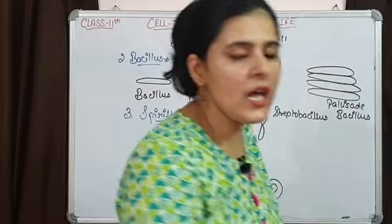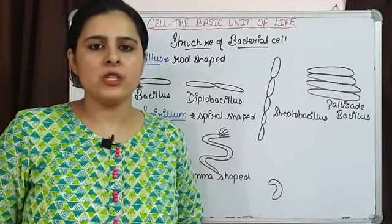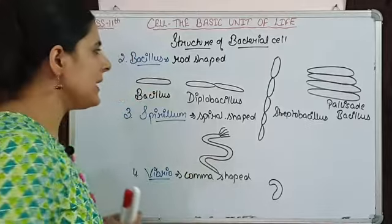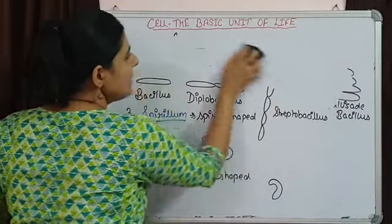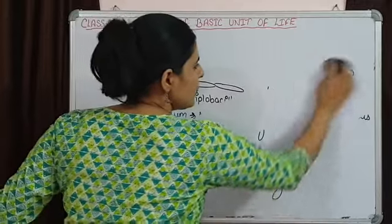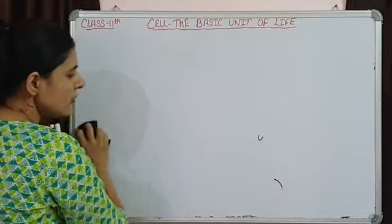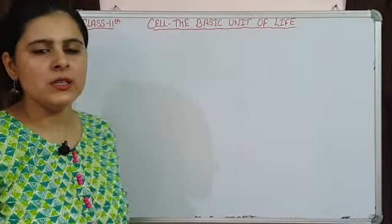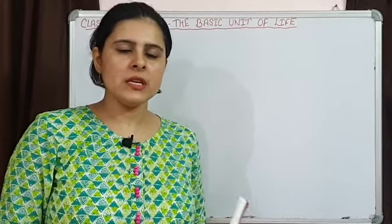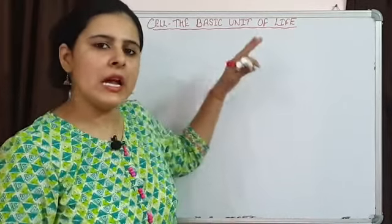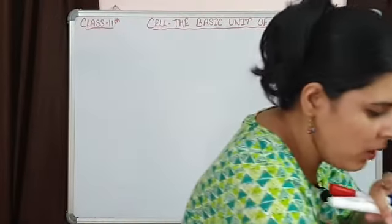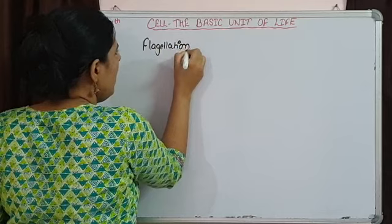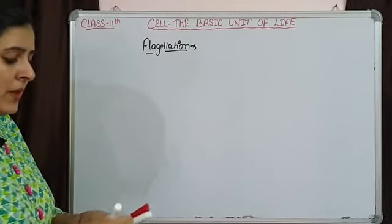Another thing we know is that bacteria may or may not have flagella. Some bacteria have only one single flagellum; some have more than one. Flagella are fine thread-like structures involved in the locomotion of the bacterial cell. Depending upon whether flagella are present or not, and if present, how many, we categorize bacteria on the basis of presence of flagella.